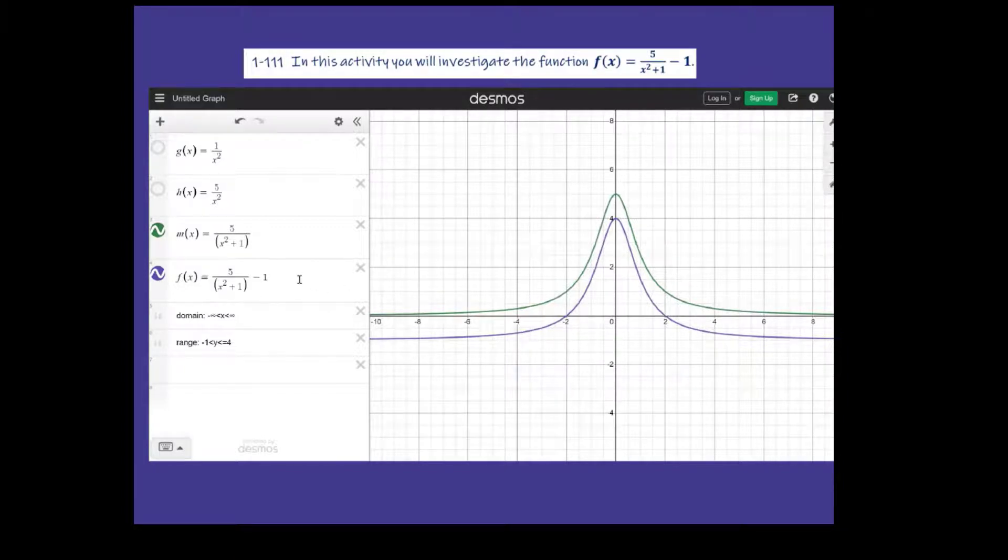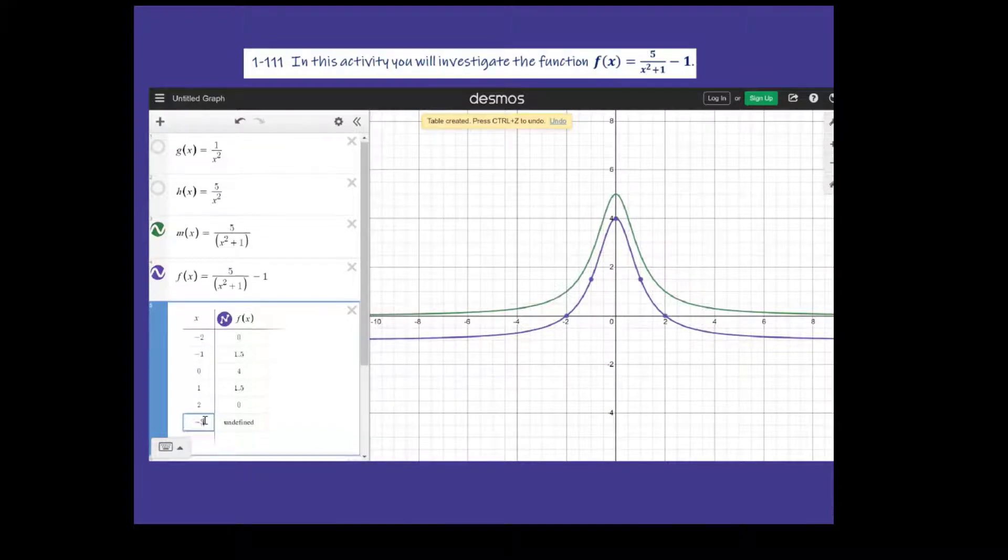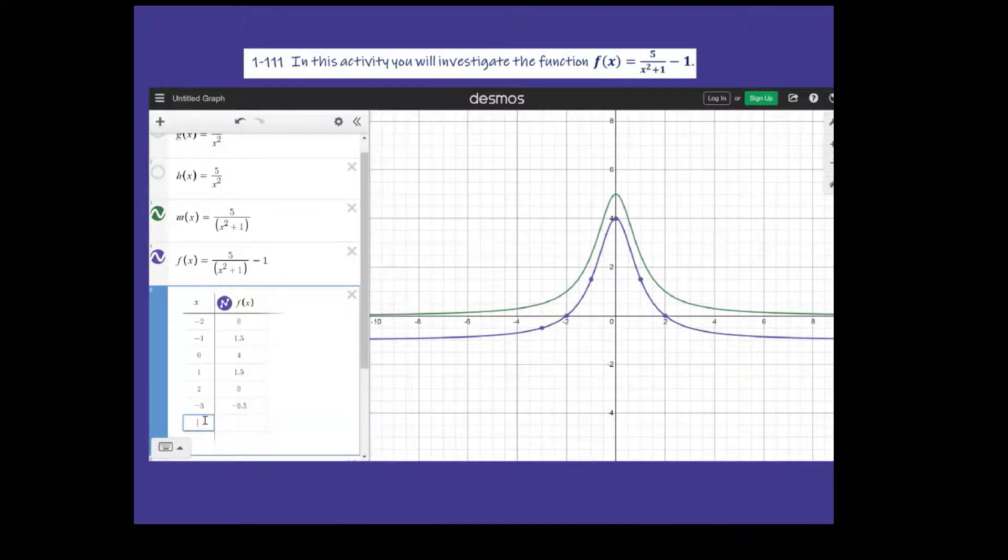And so if we take a look at a table, let's also do a table on this one. And we'll show you how it goes. So I'm going to do the same thing I did before. So I'm going to type in negative 3. It gets closer to 0.